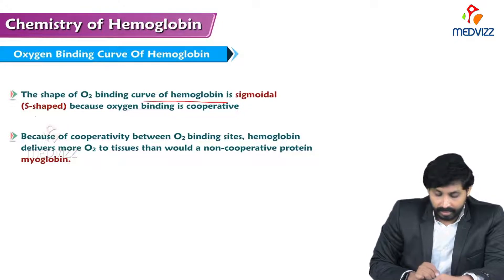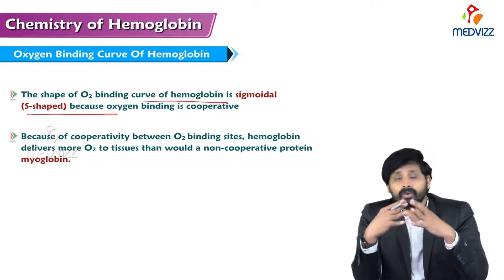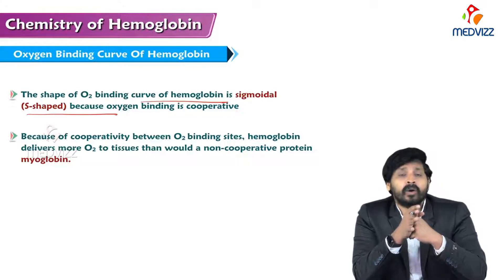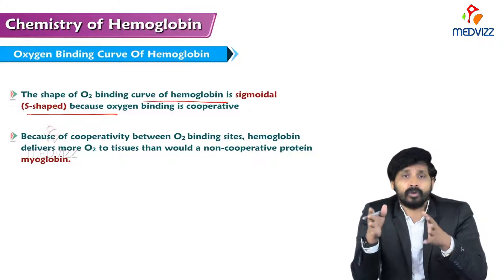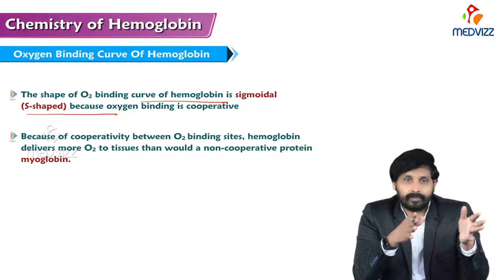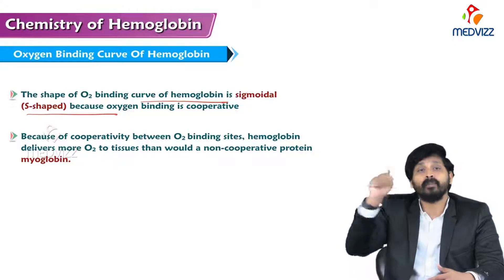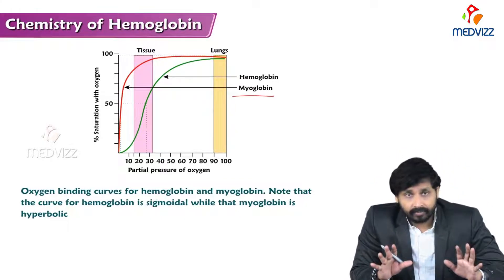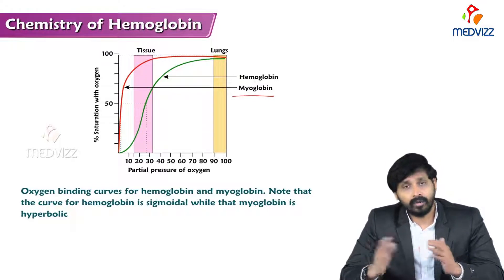The shape of the oxygen binding curve of hemoglobin is sigmoidal. When you plot the percentage of saturation of hemoglobin with oxygen on a graph, the curve is sigmoidal. Myoglobin is also an oxygen transport protein, found in muscles, but there is significant functional variation compared to hemoglobin. Myoglobin is a single polypeptide chain, whereas hemoglobin is a quaternary protein with four polypeptide chains. There is no cooperative binding in myoglobin, which is why its curve is hyperbolic — shown as the red curve in the graph.